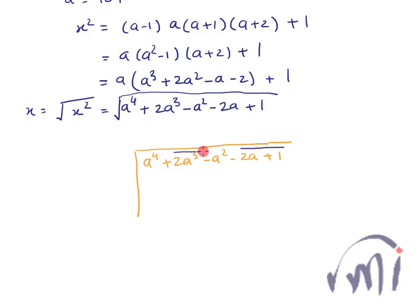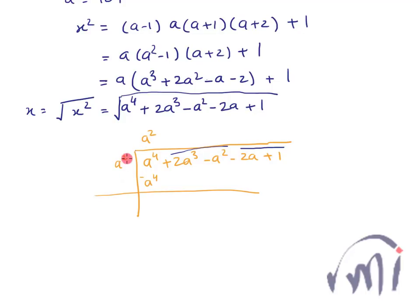First I'll make groups of two terms each. If you don't remember the division method, you can watch the video where I teach finding the square root of any algebraic expression. Here I write the same term in the divisor and the quotient so that their product is closest to a⁴. So a² times a² is a⁴, subtract to get 0, then bring down the next group: 2a³ − a².